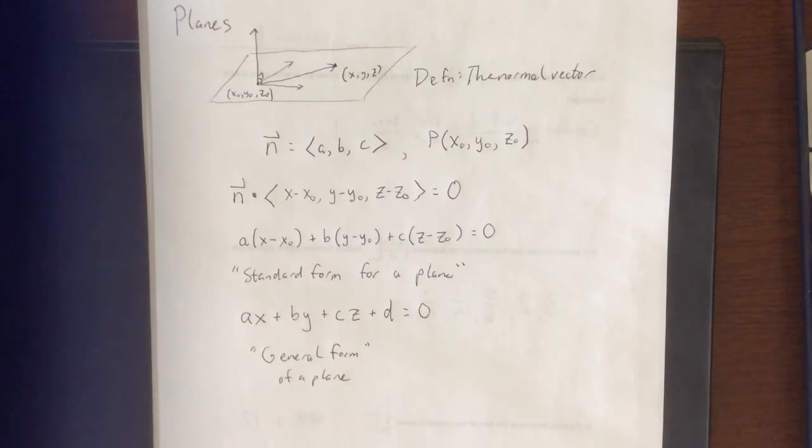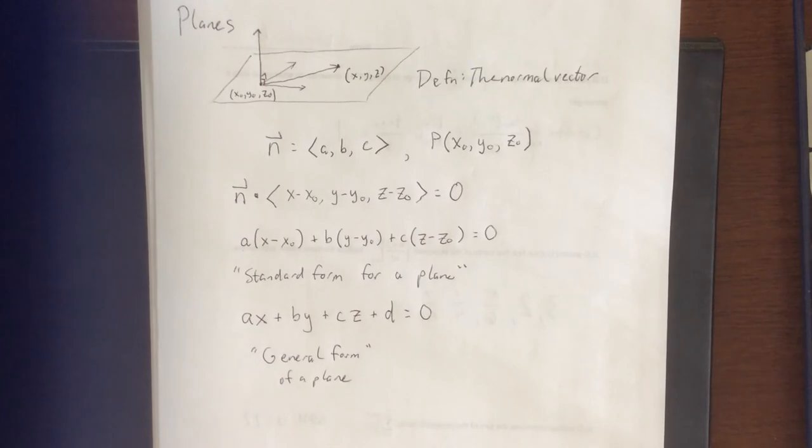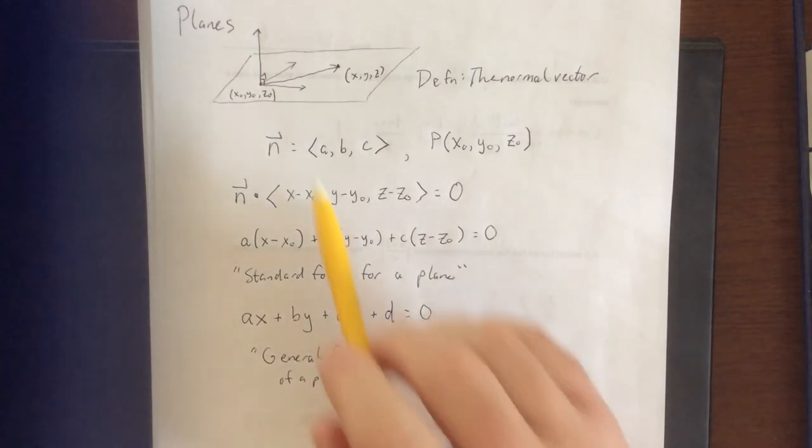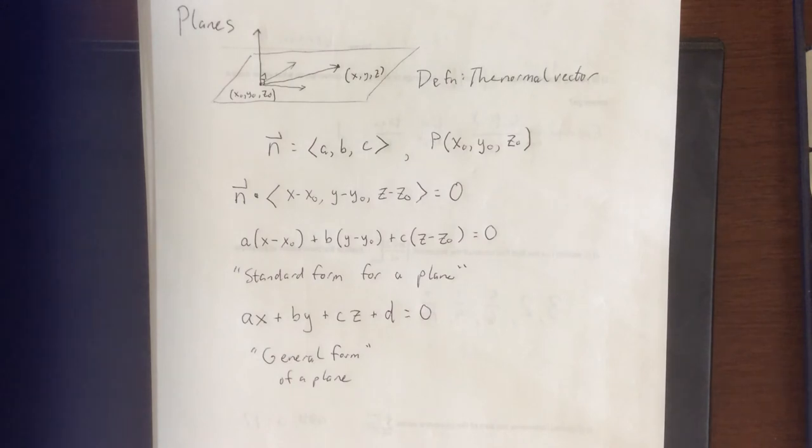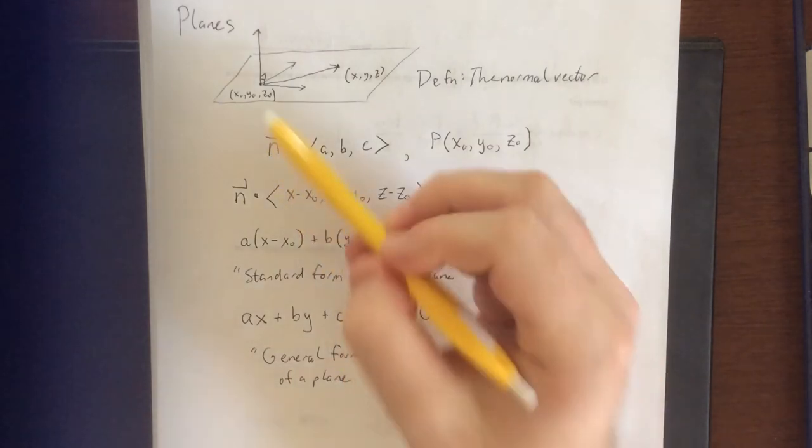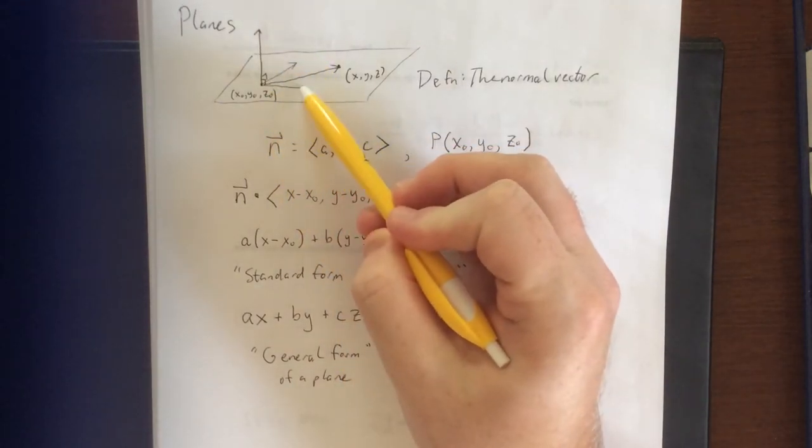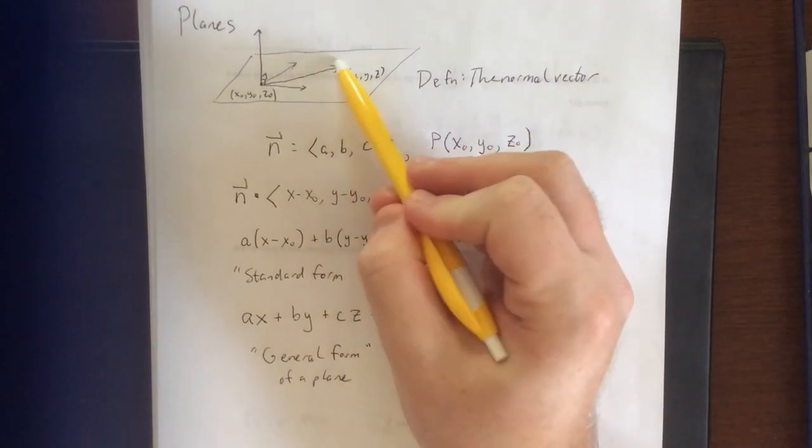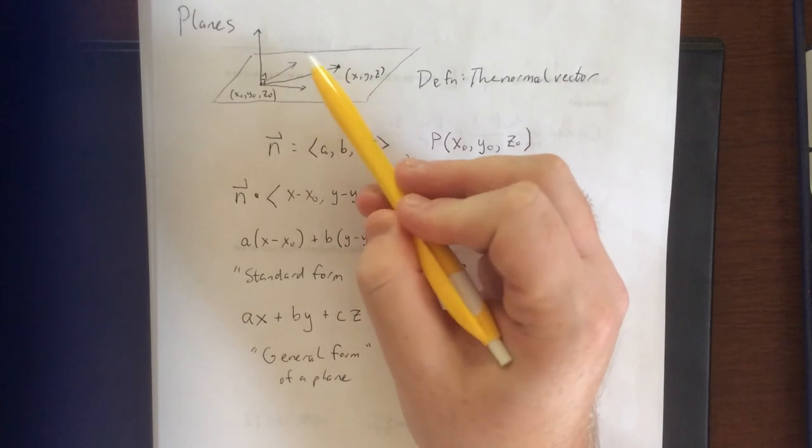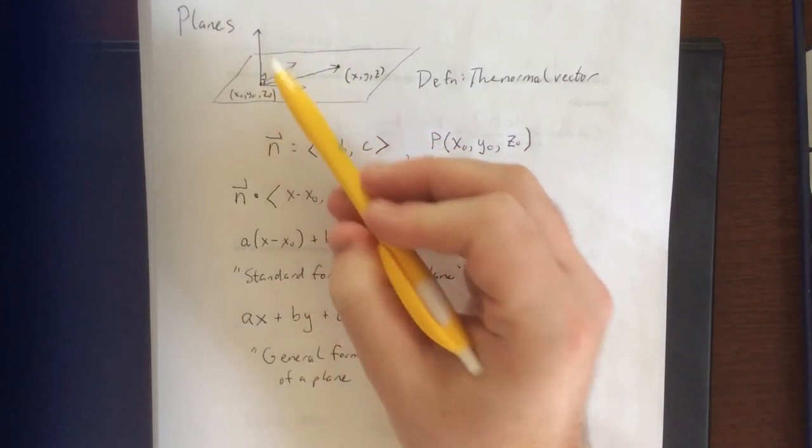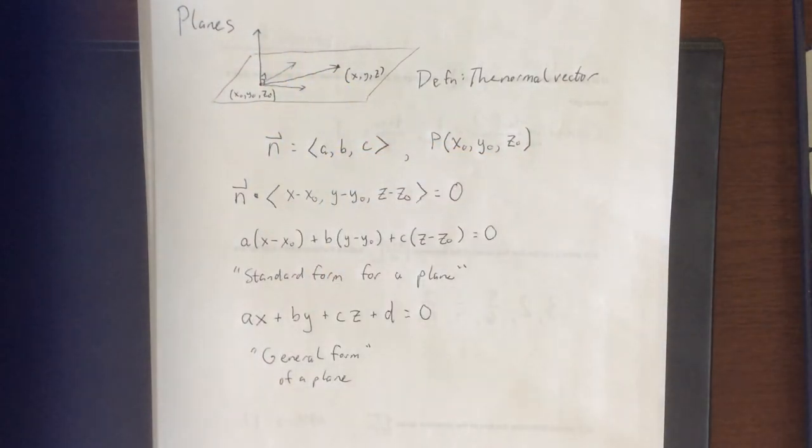So the idea is, regardless of the information that's given to you in the problem, that you want to turn that into a normal vector and at least one point within the plane. If you are given vectors within the plane, a cross product could be necessary. If you're given points within the plane, you'll probably need to turn those points into vectors, take a cross product to get the normal vector, and then you've got a normal vector and a point.